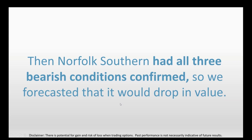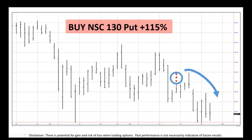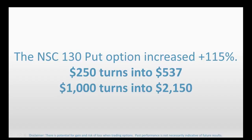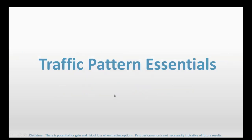Norfolk Southern also had all three bearish conditions and we forecasted it would drop. In this case, the timing was off — the three red lights appeared but NSC didn't really drop immediately. It went up for a few days and then finally went down, so we lost some time value when the stock went against us. This can happen when tracking this pattern — we're still positive, but not as positive as we'd like.